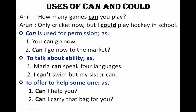Another ability example: 'I can't swim but my sister can.' This shows that swimming is my sister's ability but not mine. To offer help to someone, we use can: 'Can I help you?' or 'Can I carry that bag for you?'